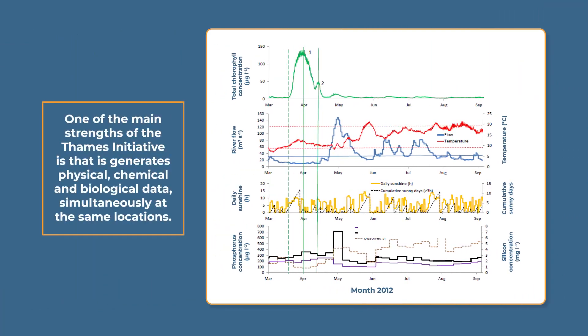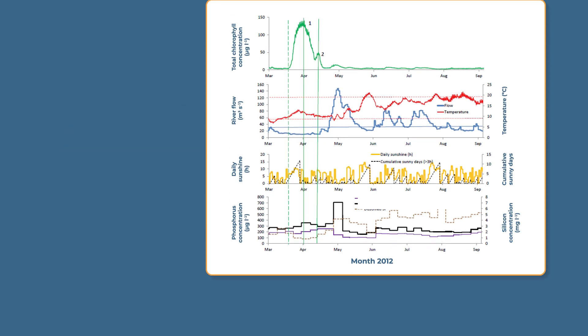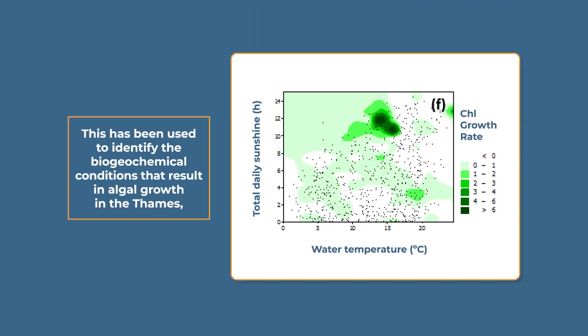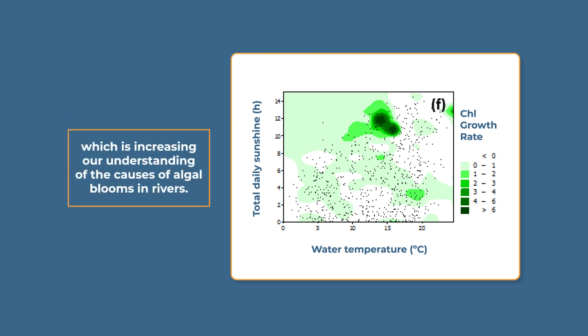One of the main strengths of the Thames Initiative is that it generates physical, chemical and biological data simultaneously at the same locations. This has been used to identify the biogeochemical conditions that result in algal growth in the Thames, which is increasing our understanding of the causes of algal blooms in rivers.